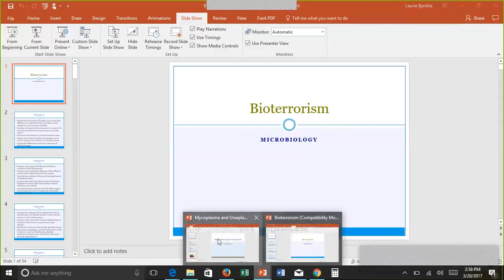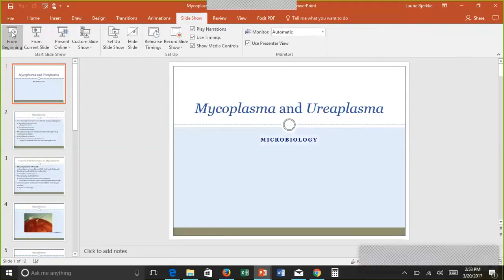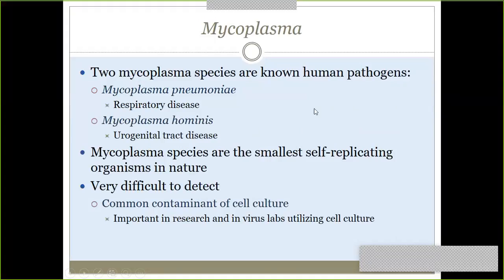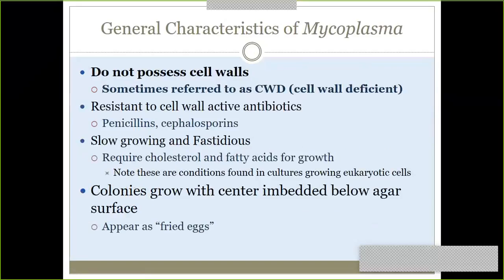Moving to the second PowerPoint: mycoplasma and ureaplasma. There are only two mycoplasma species that are known human pathogens — Mycoplasma pneumoniae, which causes walking pneumonia, and Mycoplasma hominis, which causes urogenital tract disease. Mycoplasmas are very small and difficult to detect. They will not be grown on standard agar in a typical bacterial workup. The key feature is that both mycoplasma and ureaplasma are cell-wall-deficient bacteria, so any antibiotic targeting the cell wall, like beta-lactams, would be useless against them.